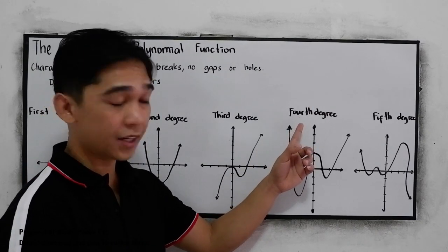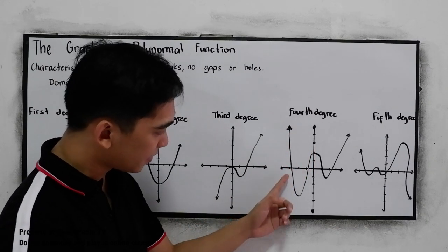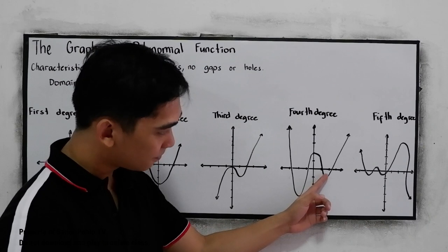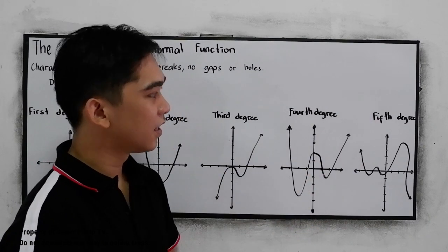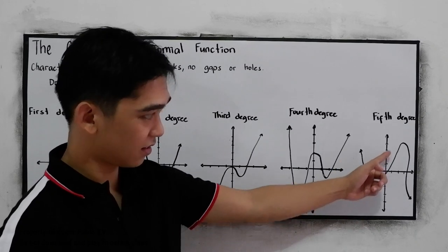And the fourth degree, the quartic function, we have here. And the fifth degree, or the quintic function. You have that graph.